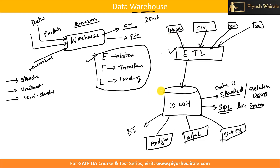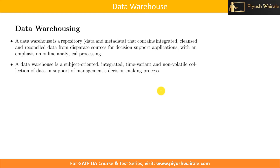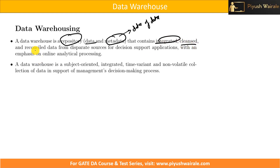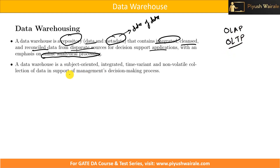To summarize, a data warehouse is a repository of data and metadata — metadata means data about data, or information about the stored data. It contains integrated, clean, and reconciled data from disparate sources, processed for decision support applications with an emphasis on online analytical processing, or OLAP. There is also the concept of OLTP, which we will discuss in upcoming lectures.